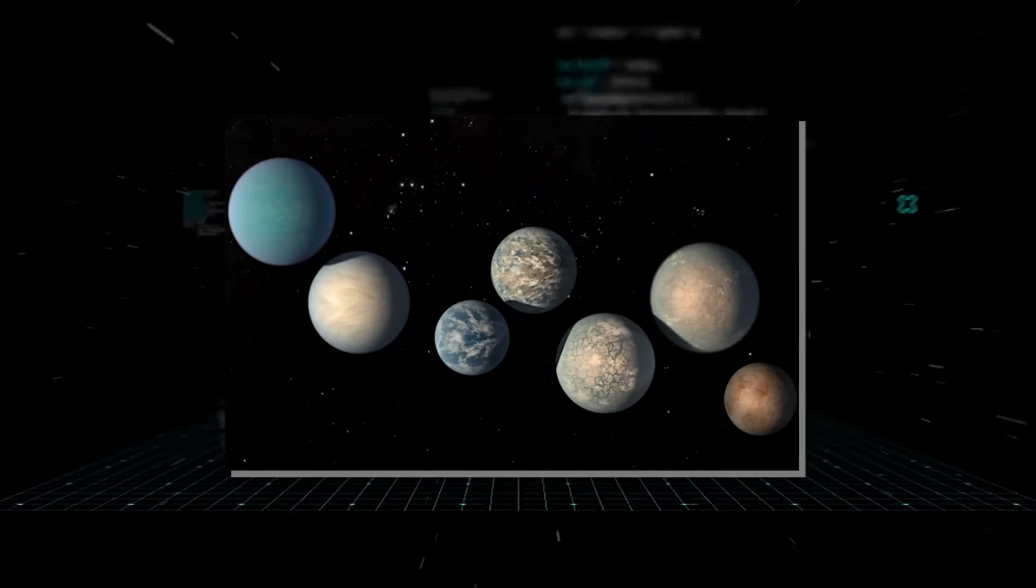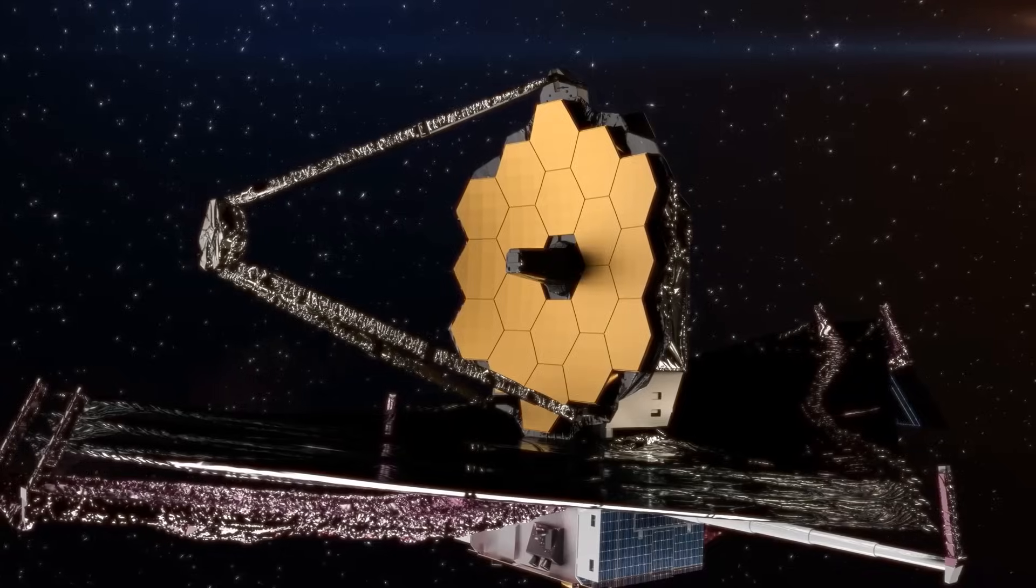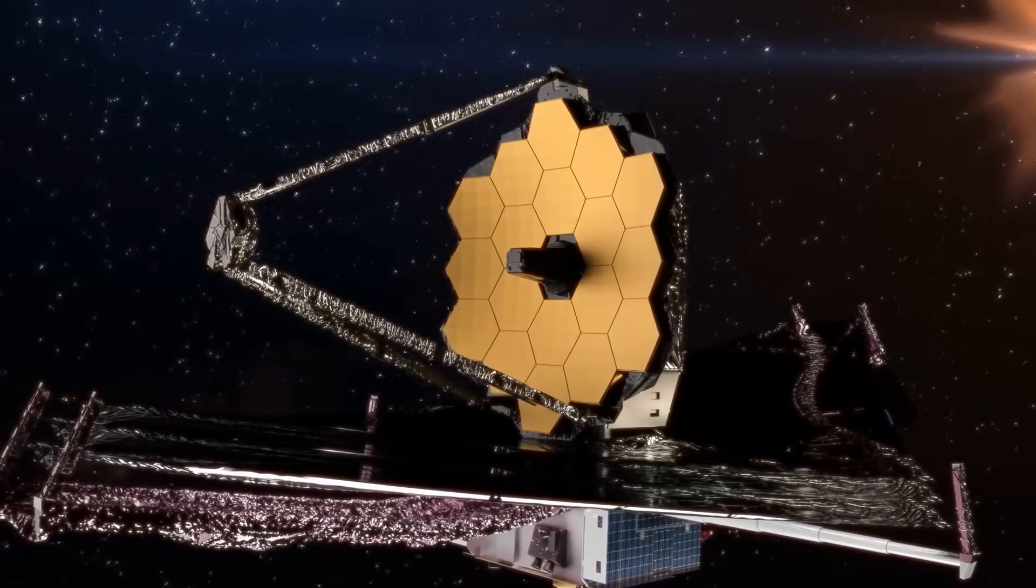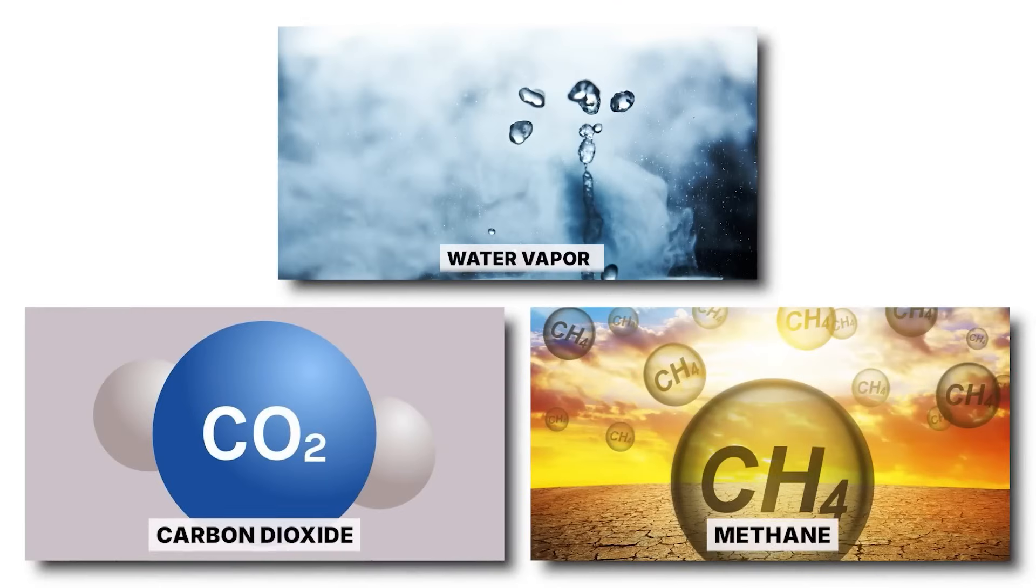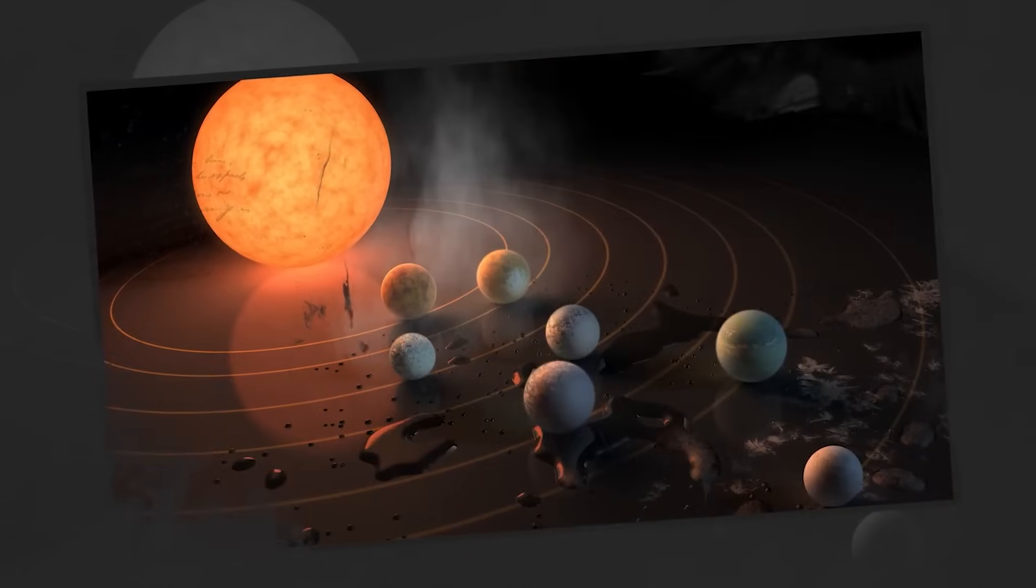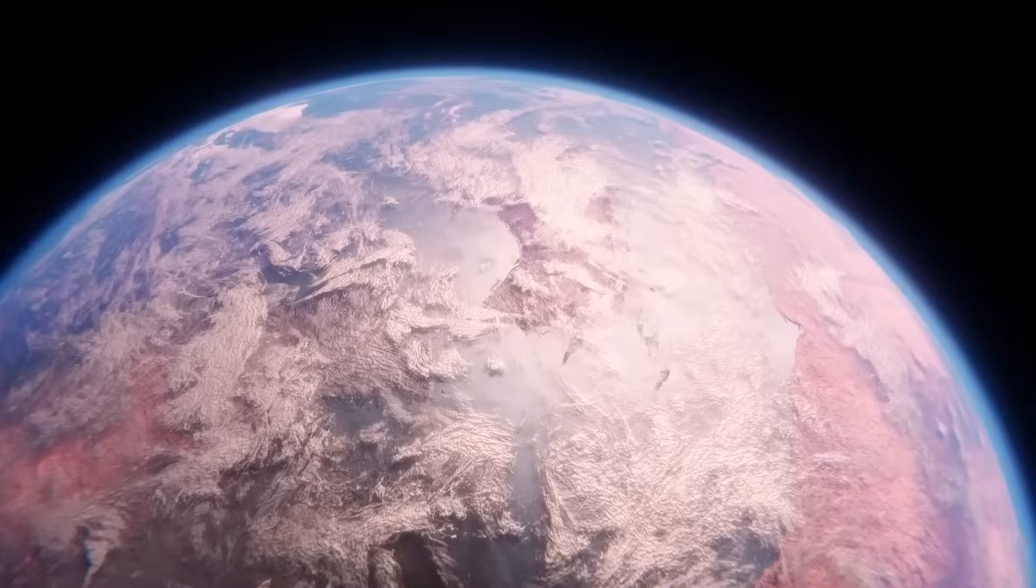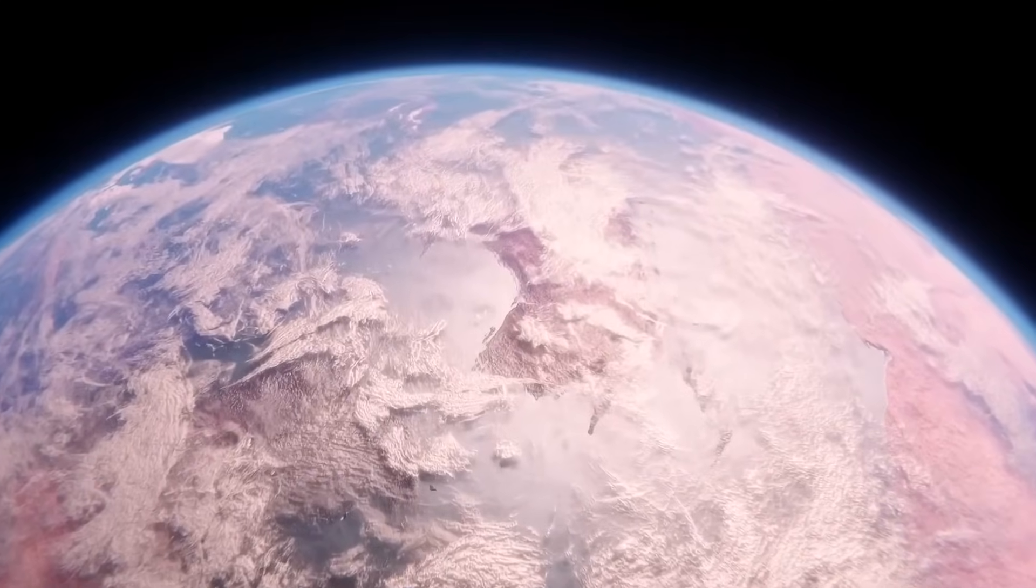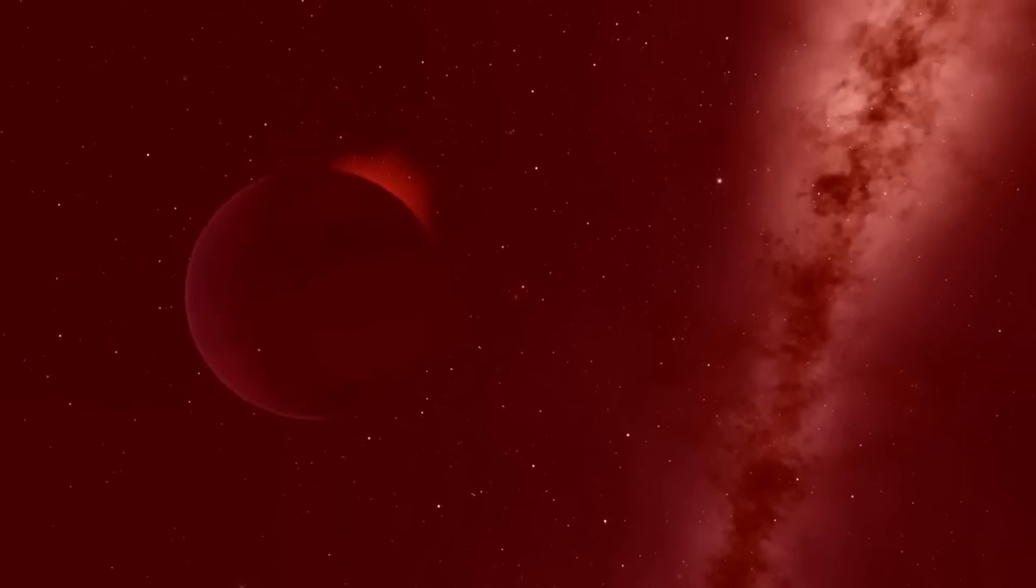TRAPPIST-1 is now a prime target for the James Webb Space Telescope, which is aiming to peer into their atmospheres and detect key ingredients like water vapor, carbon dioxide, and even methane—potential signs of life or habitability. This system isn't just another discovery, it's a cosmic goldmine, giving us a front-row seat to study real Earth-sized planets and maybe catch the first whiff of alien air.